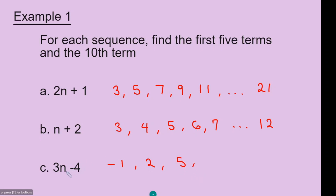To find the fourth term, n will be 4: 4 times 3 is 12, and 12 minus 4 gives 8. To find the fifth term, n will be 5: 3 times 5 is 15, and 15 minus 4 gives 11. Now to find the tenth term, n will be 10: 3 times 10 is 30, and 30 minus 4 gives 26.